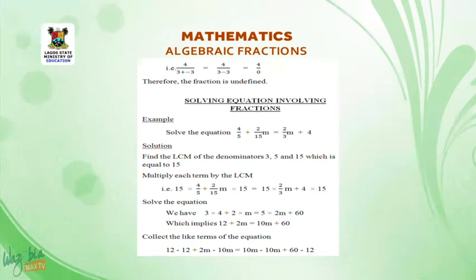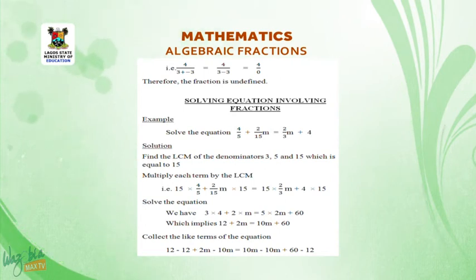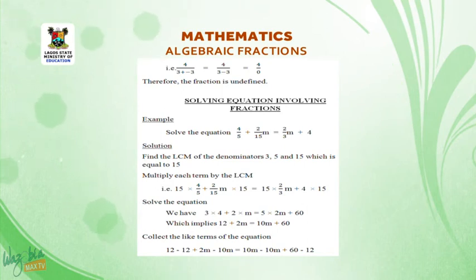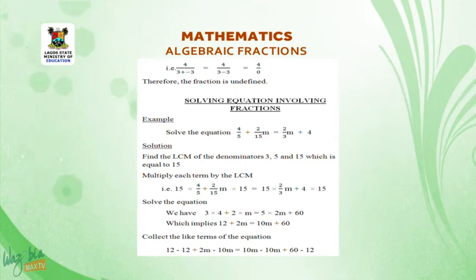Solving equations involving fractions. Example: Solve the equation 4 all over 5 plus 2 all over 15m equals 2 all over 3m plus 4. Solution: Find the LCM of the denominators 3, 5, and 15, which equals 15.